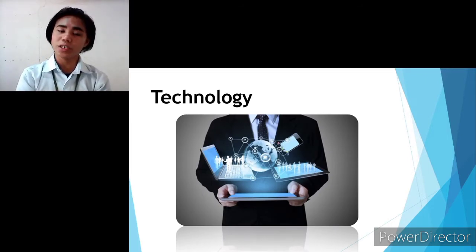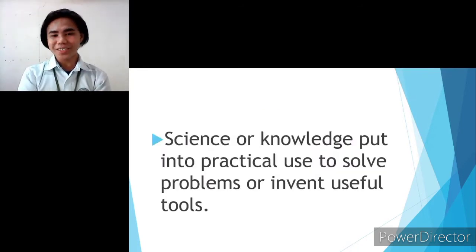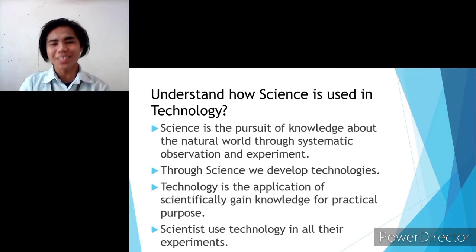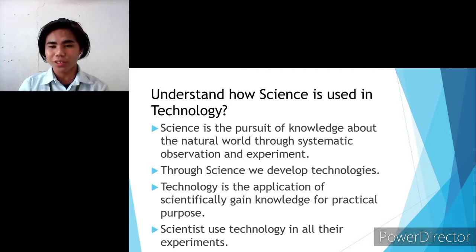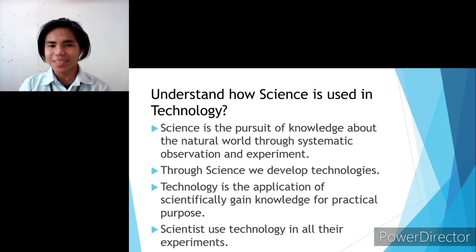As you can also see in the picture, it tells about technologies — it shows the gadgets that work for people. Technology is the result of science experimentations that makes the life of people easier. Science is the pursuit of knowledge about the natural world through systematic observation and experimentation. Through science, we develop technologies. Technology is an application of scientifically gained knowledge for a practical purpose. Scientists use technology in all their experiments, and science has a big impact and contributions in technology because the materials used in technology are experimented by science.